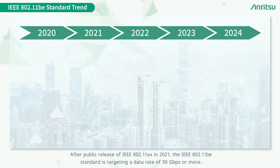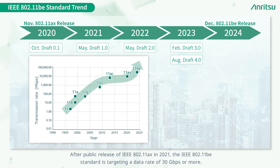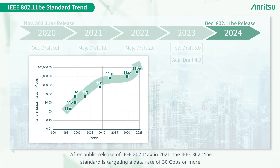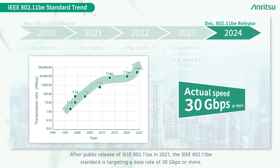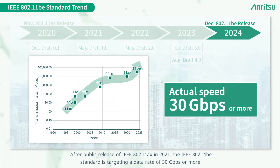After public release of IEEE 802.11ax in 2021, the IEEE 802.11be standard is targeting a data rate of 30 gigabits per second or more.